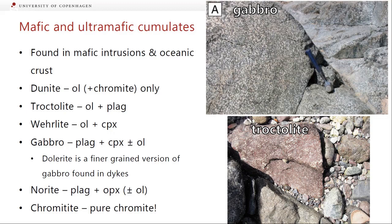We talked about a range of mafic and ultramafic cumulates during the course. Most are found in mafic intrusions or in the lower part of oceanic crust. These are basically different combinations of olivine, pyroxene, and plagioclase. Dunite is basically pure olivine, usually with a bit of chromite. Troctolite is olivine plus plagioclase, seen in some ophiolites and oceanic crust. Wehrlites are olivine and clinopyroxene. Gabbro, in the top right, is plagioclase, clinopyroxene, and olivine — if it's finer-grained, say in a dike, it's called dolerite, but there's no compositional difference between dolerite and gabbro. Norite is defined by plagioclase plus orthopyroxene, sometimes with a bit of olivine. And finally chromitite, discussed when we covered the Bushveld intrusion, is a pure or very high proportion chromite rock.